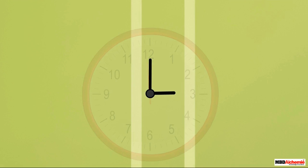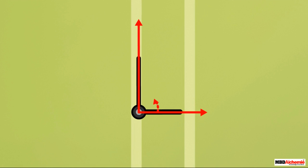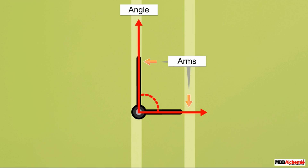When two rays have a common end point, they form an angle. The two rays that form an angle are called its arms. The common end point is called the vertex of the angle.